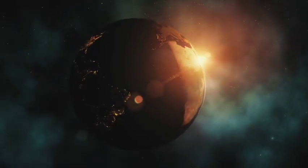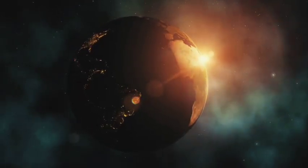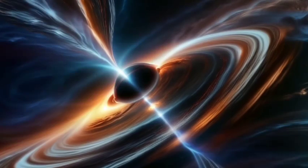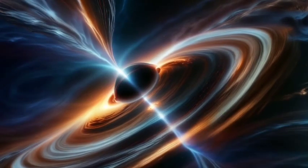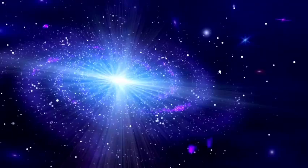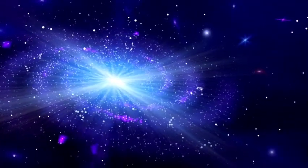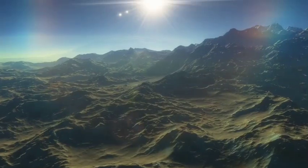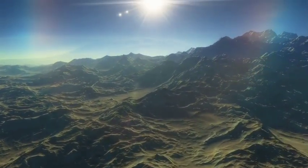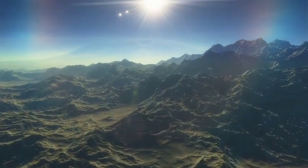Another fascinating scenario is the possibility that Pluto could be ejected from the solar system entirely. While this is highly unlikely in the near future, it is not impossible over long timescales. Interactions with Neptune, Jupiter, or even a passing star could provide Pluto with enough energy to escape the Sun's gravitational influence, turning it into a rogue planet drifting through interstellar space.